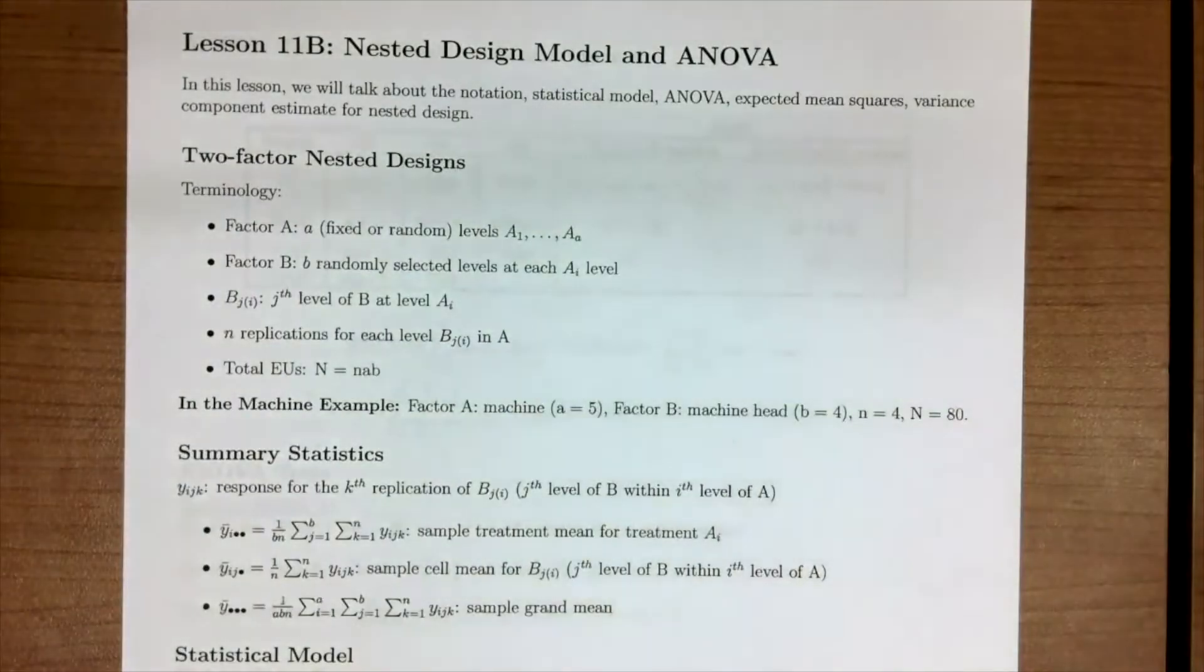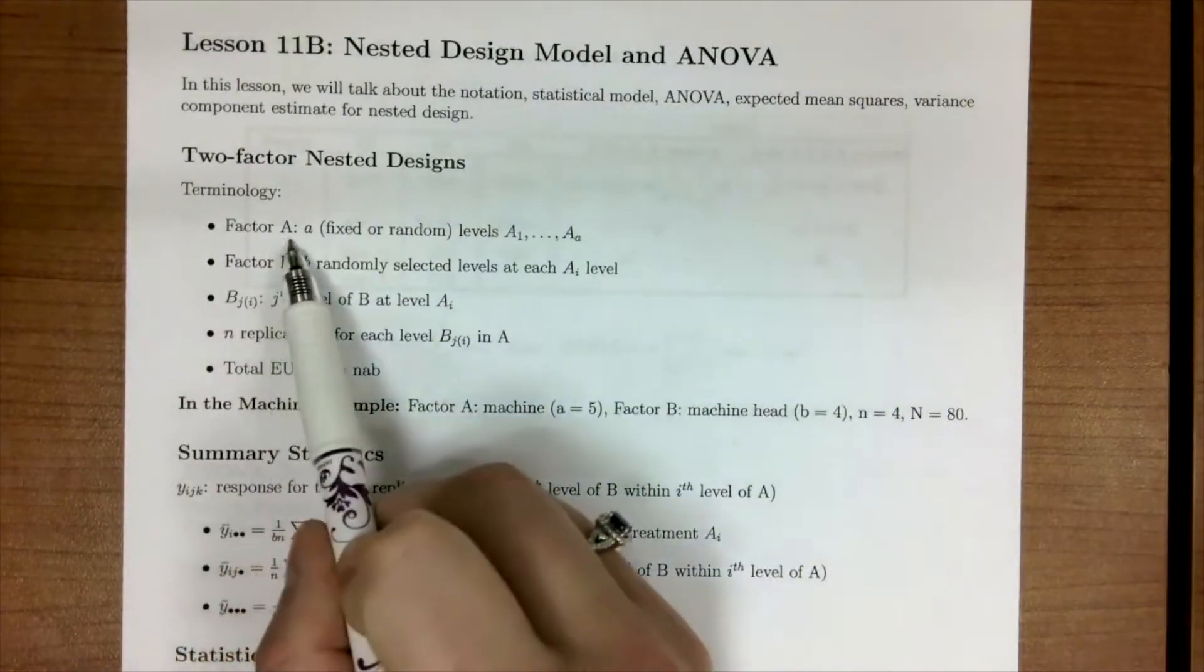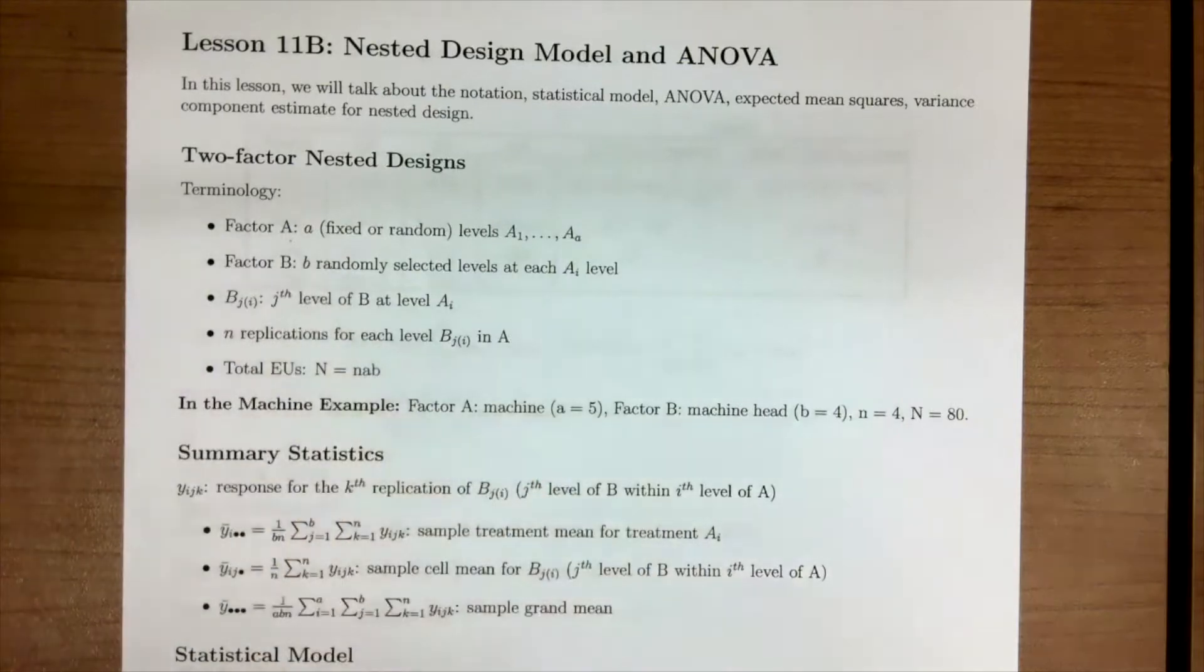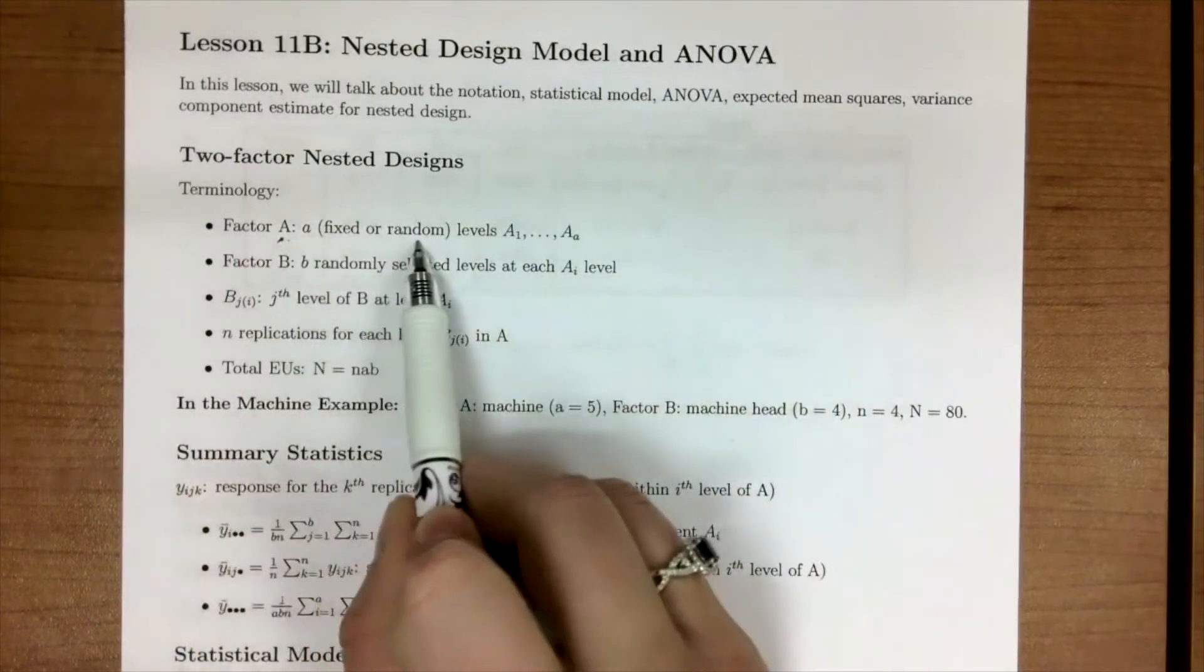So let's talk about some terminology. We have factor A, and in our case is going to be the upper level. It's arbitrary, you could have chosen either one, but for the sake of consistency, we'll have factor A be the upper level, which can be fixed or random.